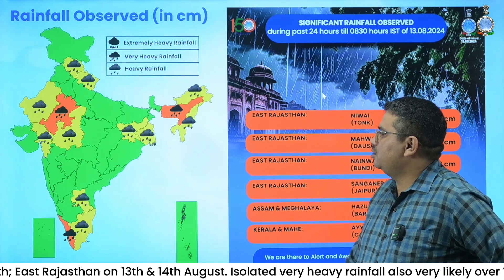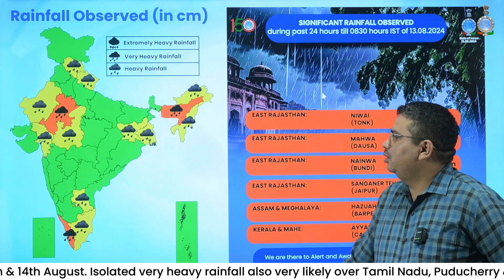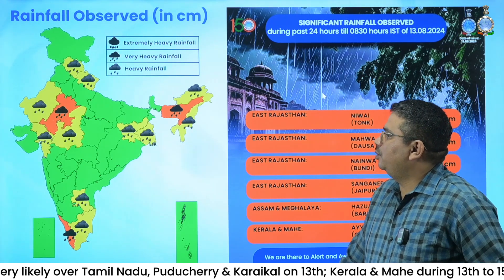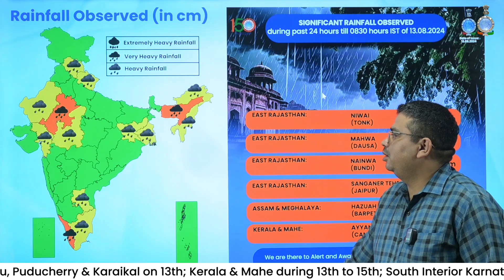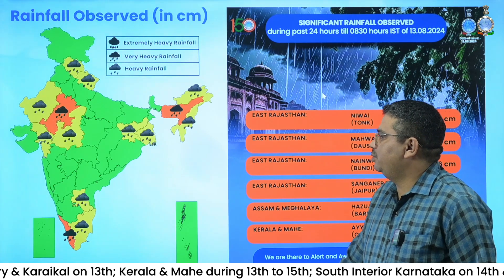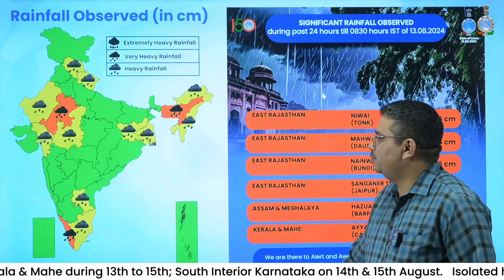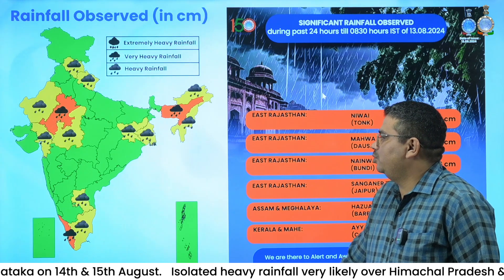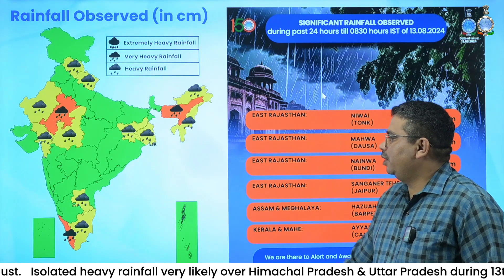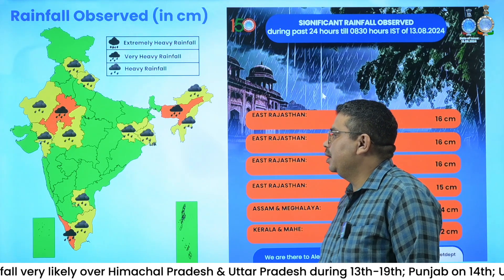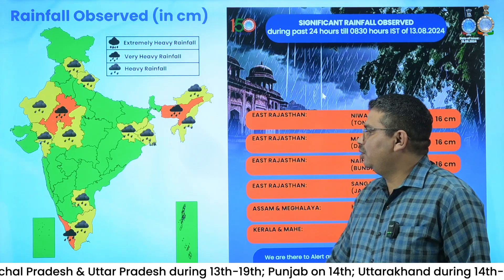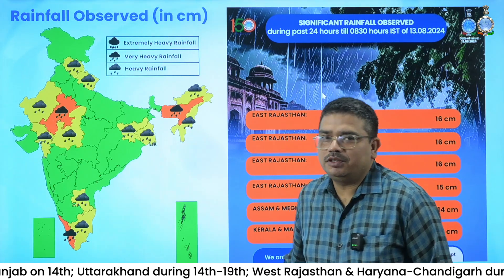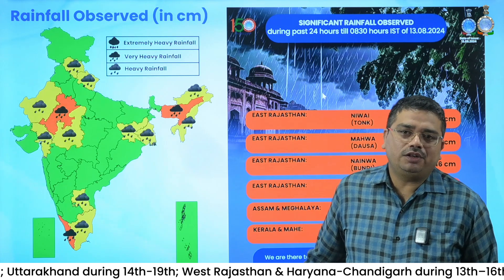The regions shown here by green color reported isolated to scattered rainfall over the plains of northwest India, scattered to fairly widespread over remaining and eastern parts of the country and adjoining central parts of the country, and fairly widespread to widespread over Maharashtra, especially Konkan and Goa region, and the remaining parts of south peninsula India with light to moderate rainfall.